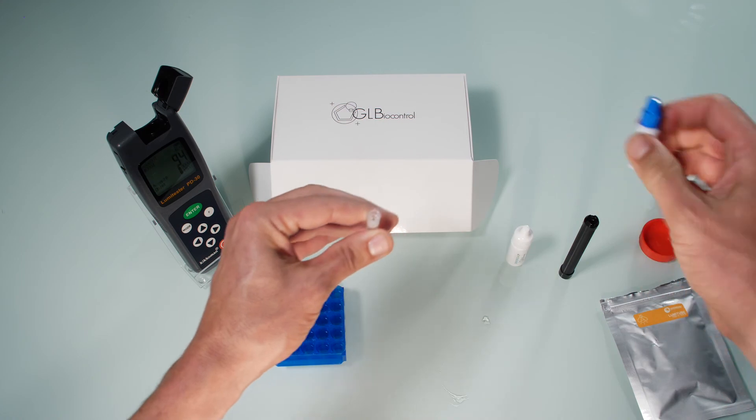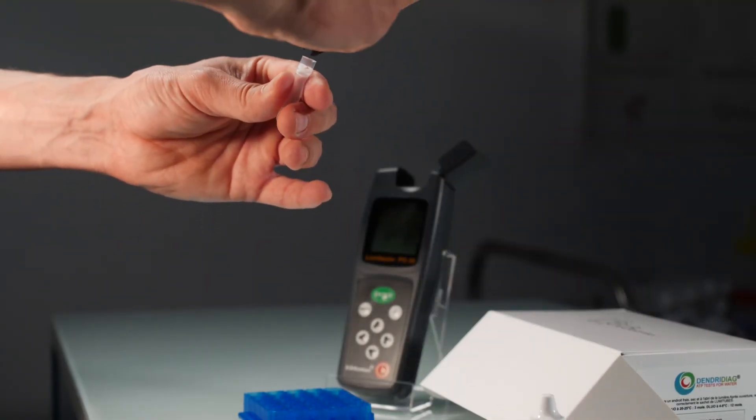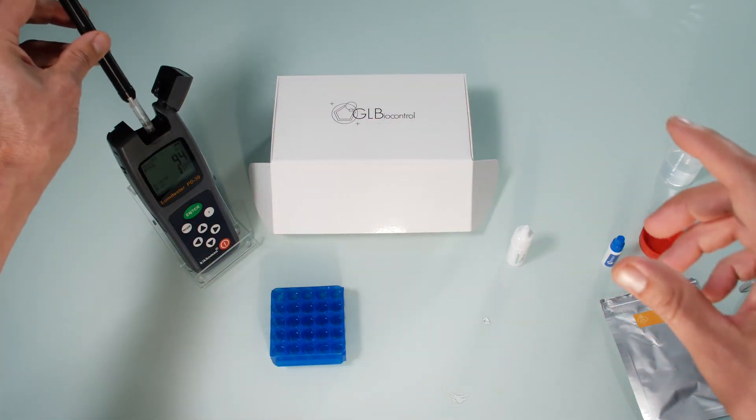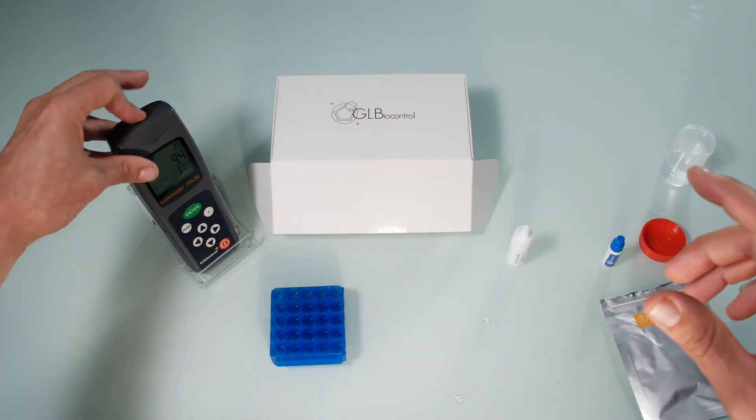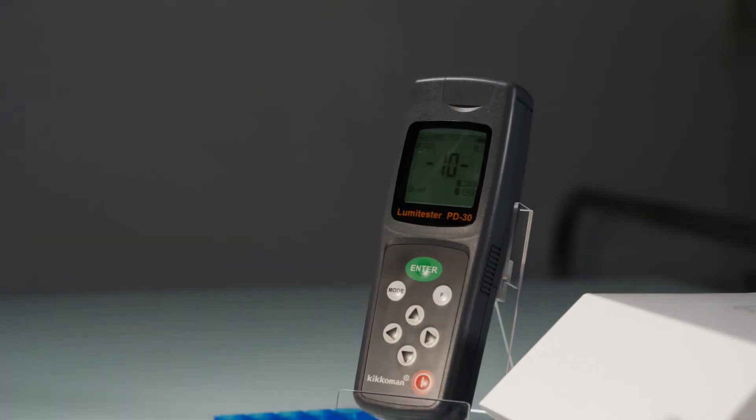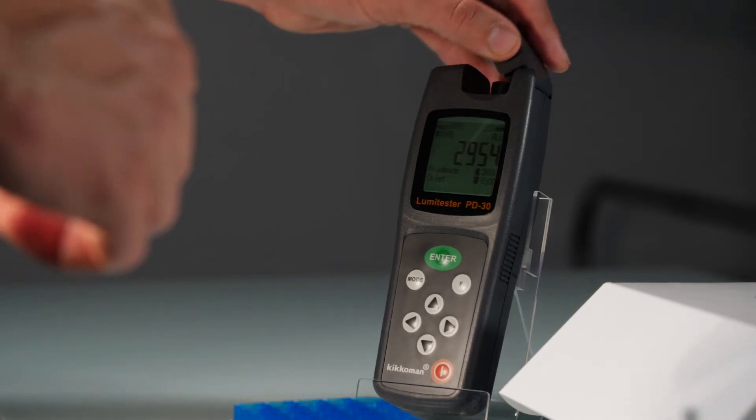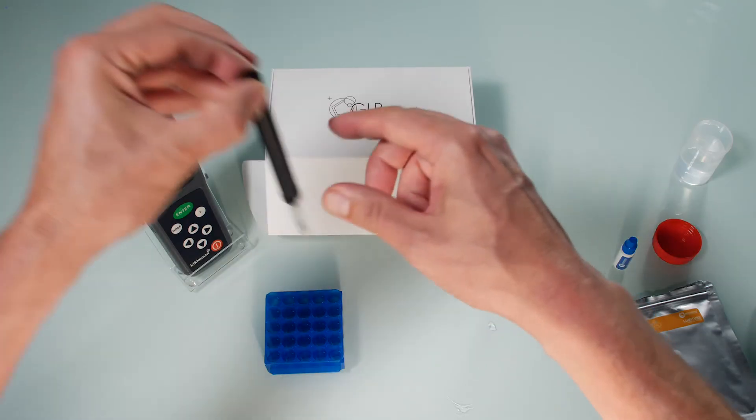Now once again clip the lumi tube onto its holder and tap it slightly on a flat surface to mix it. Reinsert into the device. Close the lid and press enter. Once again the calculation will take 10 seconds and the result referred to as value R2 is displayed. Note it down.